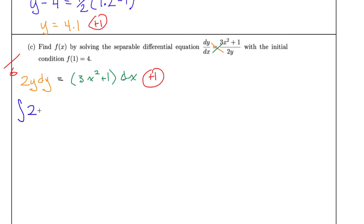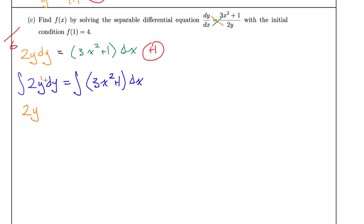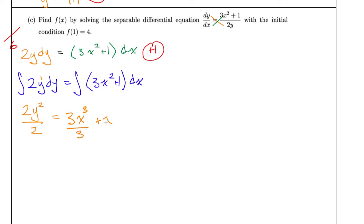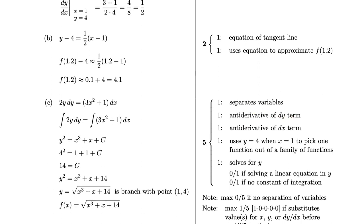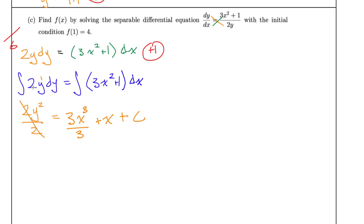We're going to slap on those integrals. The integral of 2y dy equals the integral of the quantity 3x squared plus 1, dx. The antiderivative gives y squared on the left. On the right, distributing the integral gives x cubed plus x. So y squared equals x cubed plus x plus c. You get plus 1 for the left-hand side being y squared, plus 1 for the right-hand side x cubed plus x, and a note: this older test doesn't award a separate point for the constant of integration.